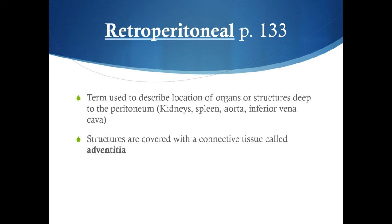We also have a term called retroperitoneal — retro here doesn't mean anything old school, but rather means behind the peritoneal cavity. So retroperitoneal is deeper, more posterior, or behind the peritoneal cavity. Some organs found in this region include the kidney, spleen, part of the aorta, and part of the inferior vena cava. These structures are not covered by the peritoneal membrane — they don't have a serosa or visceral peritoneum, but instead have something called adventitia, which is connective tissue.